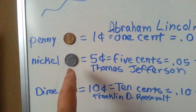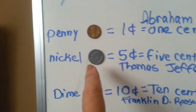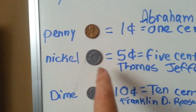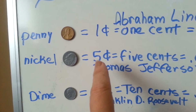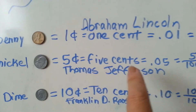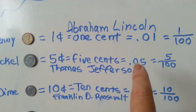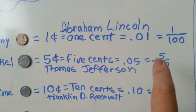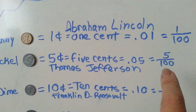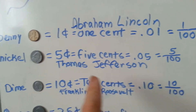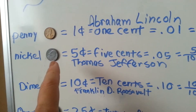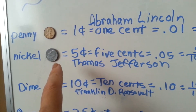This is a nickel right here. It is five cents, equal to .05 or five one-hundredths of a dollar, and has a picture of Thomas Jefferson on it.